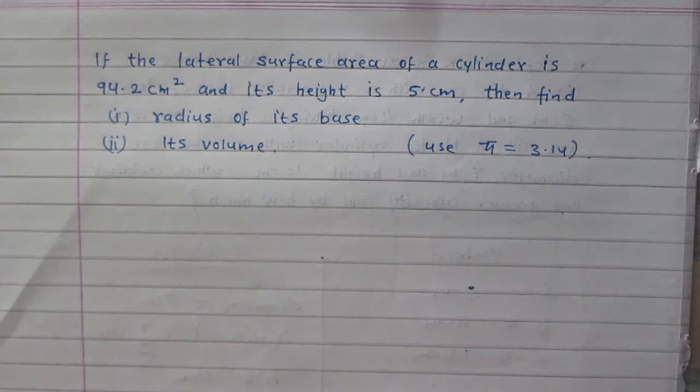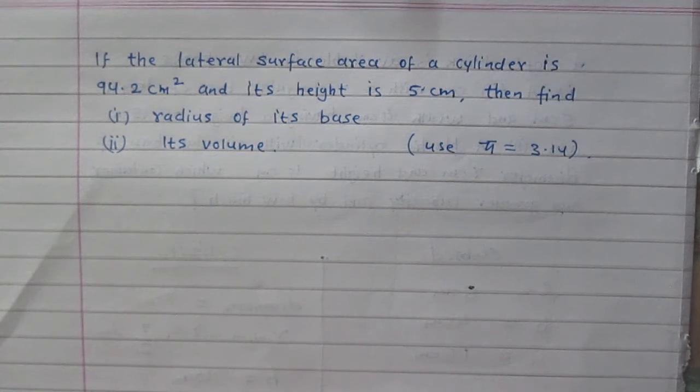If the lateral surface area of a cylinder is 94.2 cm² and its height is 5 cm, then find: (1) radius of its base and (2) its volume.